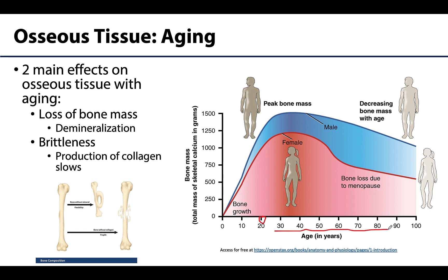This leads to two main effects on osseous tissue in aging adults. The first is loss of bone mass, which occurs because of demineralization — the loss of appropriate calcium levels or other minerals from the bony extracellular matrix. This can start to occur as early as age 30 in certain individuals, particularly women. Another major effect of aging is the increase of brittleness in bone due to slowing of collagen production. Collagen is the organic material in the extracellular matrix and is very important for tensile strength, so with its loss, bones become brittle and more likely to fracture or even shatter.